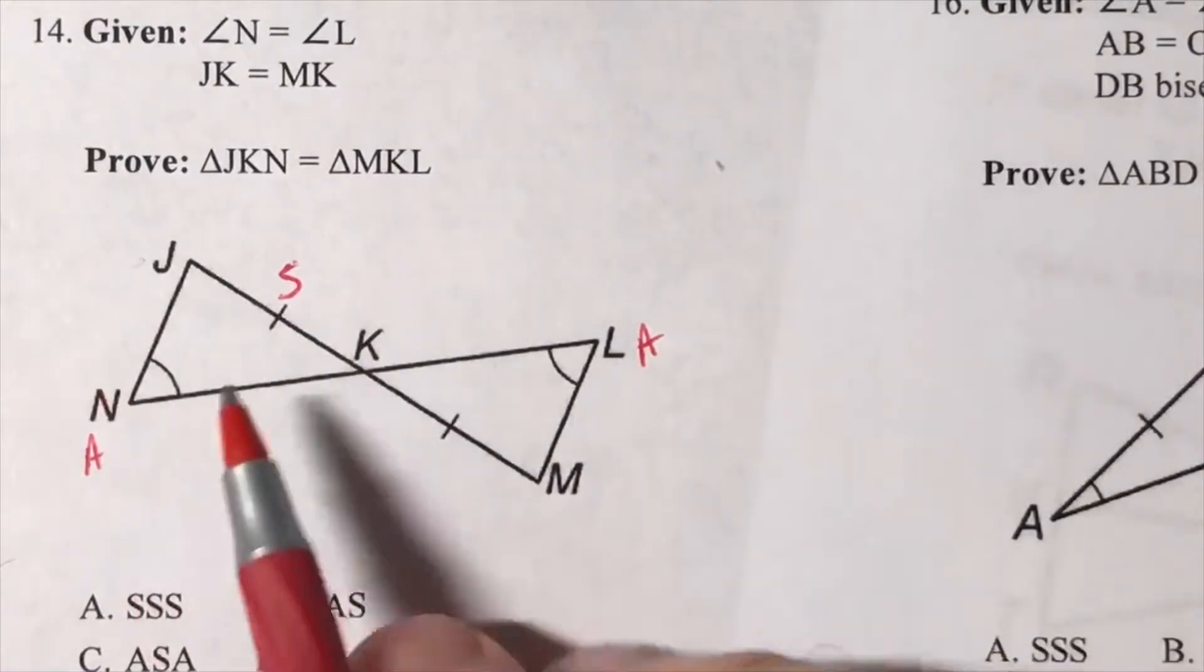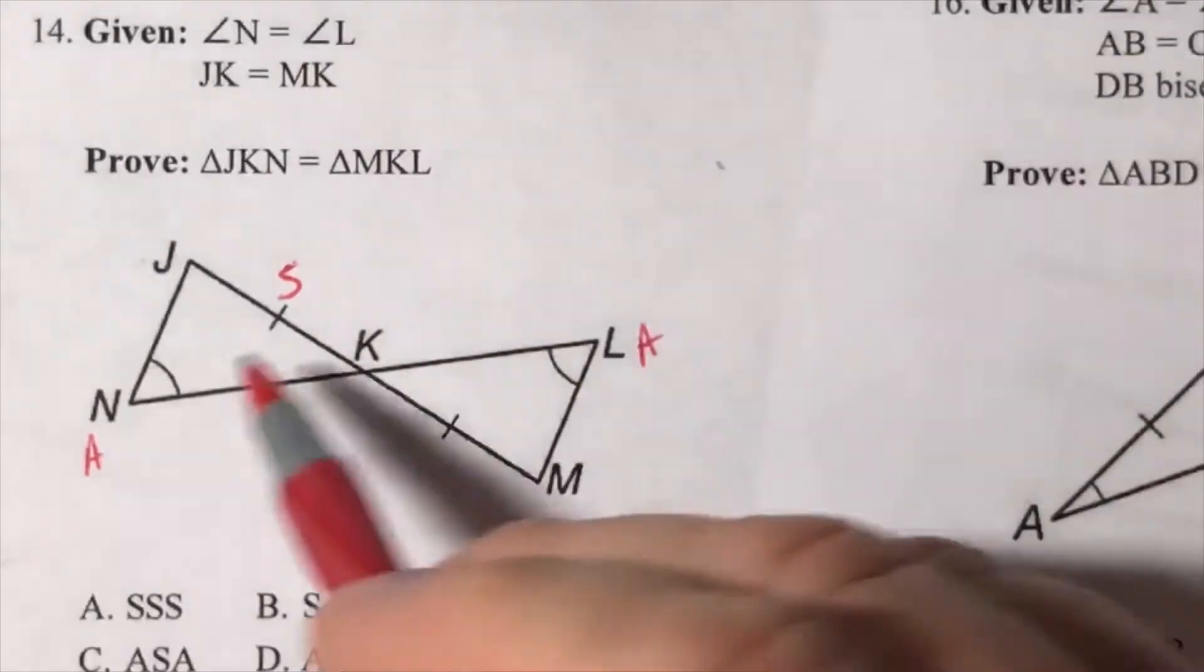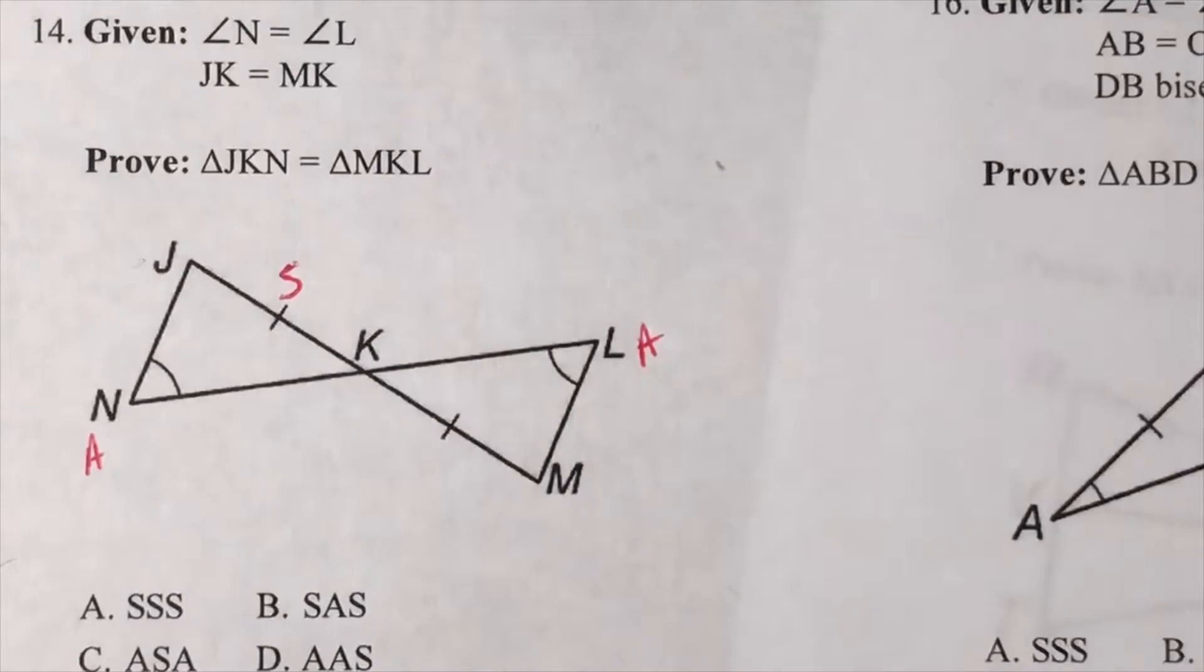That's it, that's all that's given. Now you've got to bring in some other things. The two things that most commonly occur that you need to bring in that's not in our given would be vertical angles and the reflexive property.